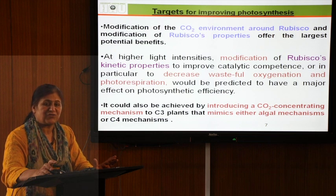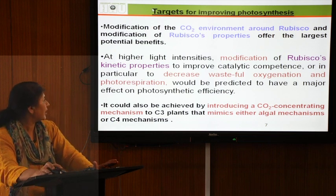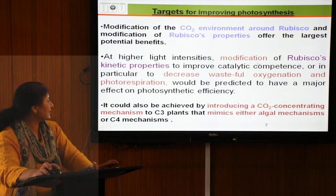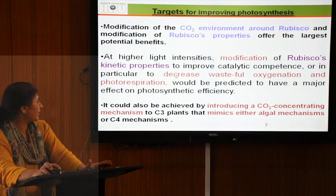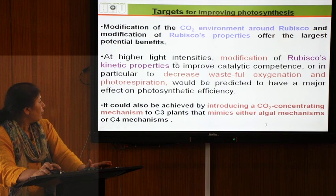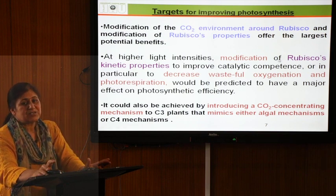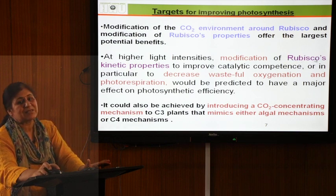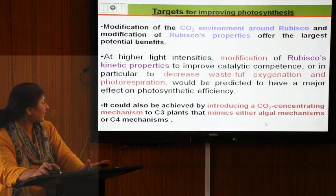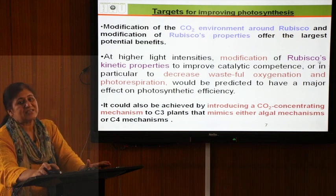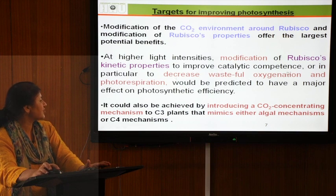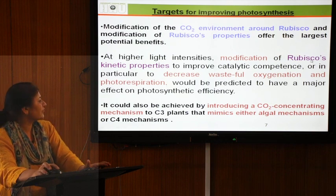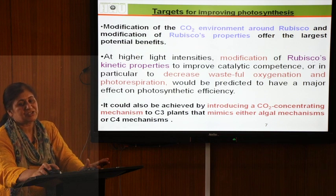To control photosynthesis by modifying rubisco kinetic properties, it is important to note that rubisco functions both as a carboxylase and as an oxygenase. If the oxygenase activity is reduced, the wasteful oxygenation process — photorespiration — decreases, and rubisco works more toward CO2 fixation. This can be achieved by introducing a CO2 concentrating mechanism (CCM) into C3 plants.